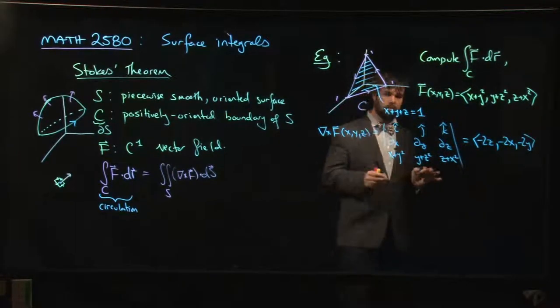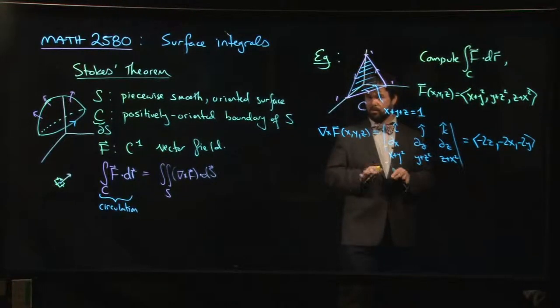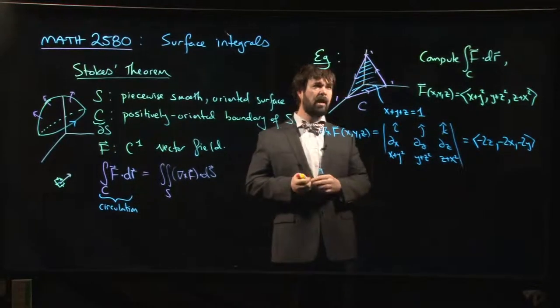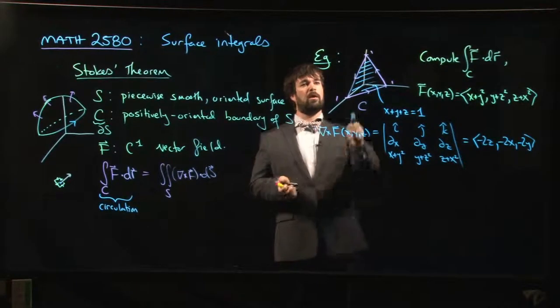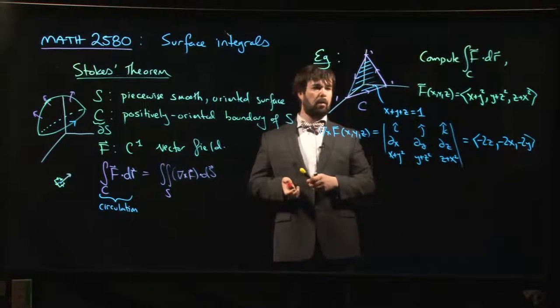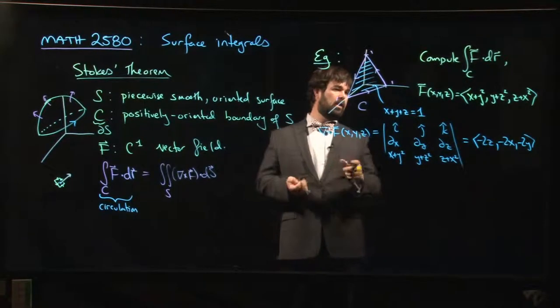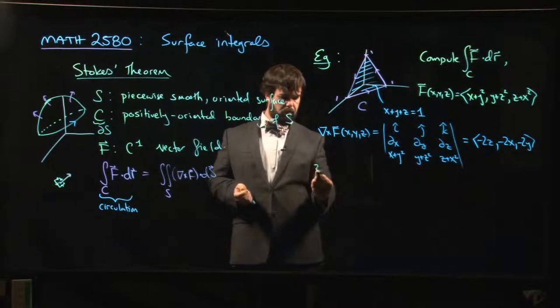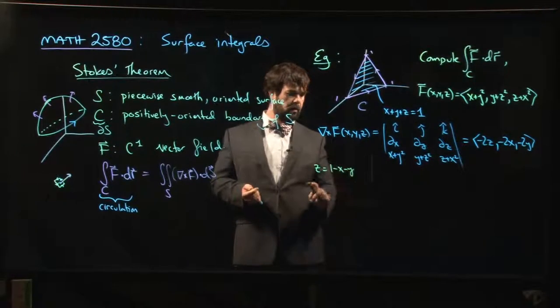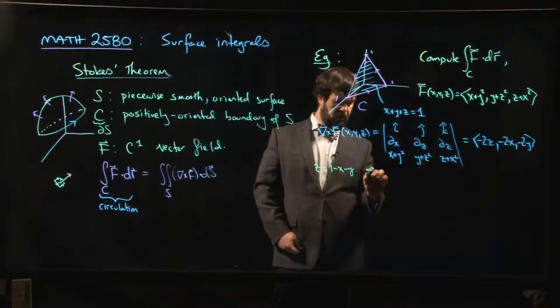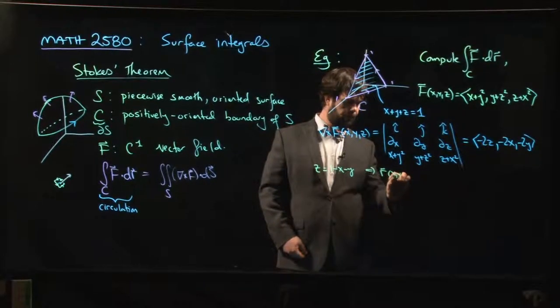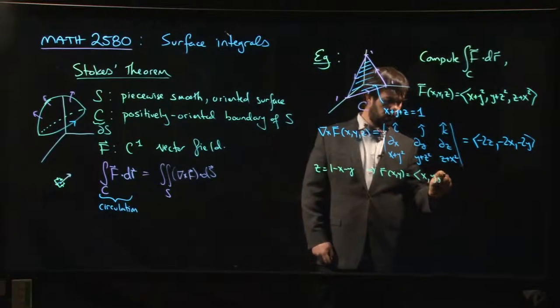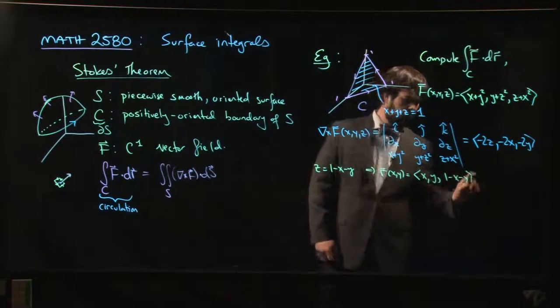So there's our curl. That looks pretty simple. This looks like maybe something that's worth trying. Okay, so now we have to decide: if we're going to apply Stokes' Theorem, we've got to decide how we want to set up the surface. I think one option here is we probably treat the surface as a graph. So we can say z = 1 - x - y, and so then that means that my parameterization is going to be (x, y, 1 - x - y).